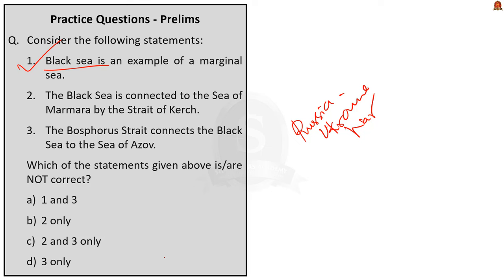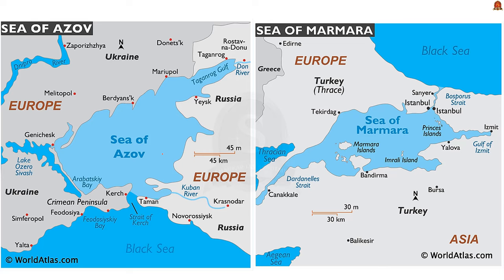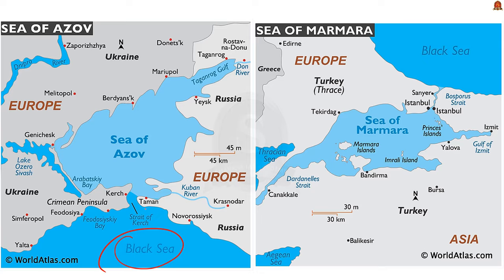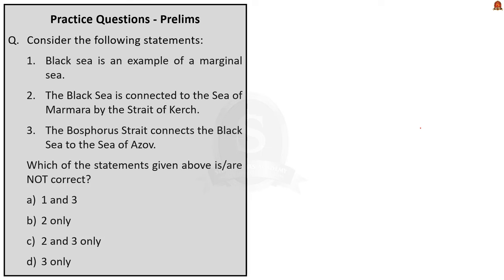The second statement says the Black Sea is connected to the Sea of Marmara by the Strait of Kerch, and the third statement says the Bosporus Strait connects the Black Sea to the Sea of Azov — both are actually incorrect and interchangeably stated. The Black Sea is an inland sea between southeastern Europe and western Asia, bordering Romania, Bulgaria, Ukraine, Russia, Georgia, and Turkey — remember these using the mnemonic 'tea and burger.' In reality, the Strait of Kerch connects the Black Sea to the Sea of Azov, and the Bosporus Strait connects the Black Sea to the Sea of Marmara. So statements two and three are incorrect; the correct answer is Option C — two and three only.